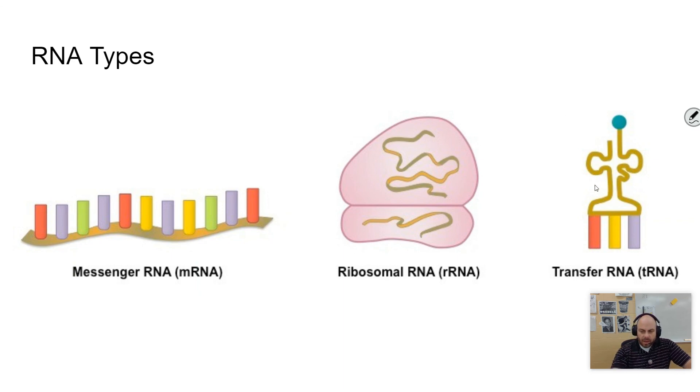And then lastly, there's tRNA or transfer RNA, and basically what the tRNA does is it has these three bases here at the bottom called the anticodon, which will match up with the codon on the messenger RNA, and will bring a particular amino acid associated with that codon, which we will talk more about in a video on translation.